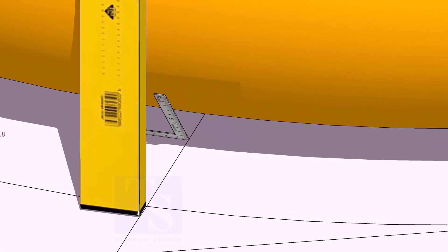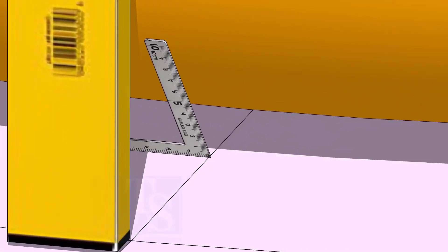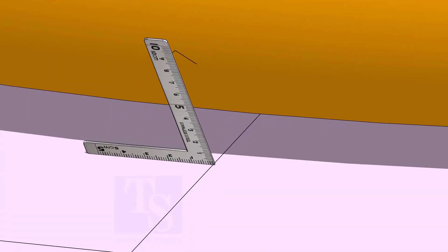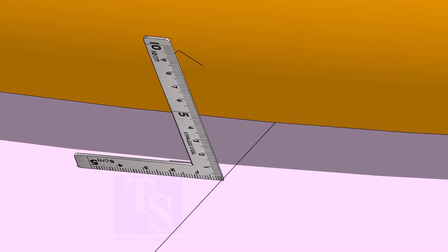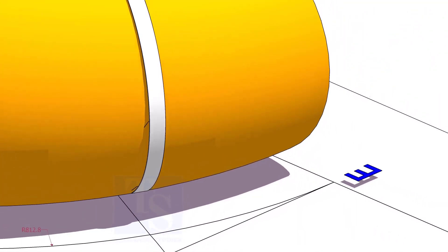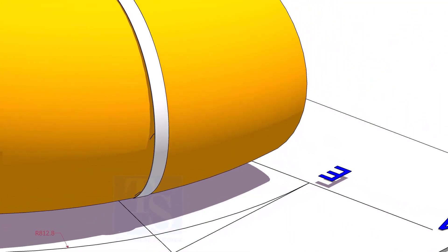At the bottom side, use a small right angle and transfer the line to the elbow on both sides. Use a bend scale and connect the marks to form a circle around the elbow.